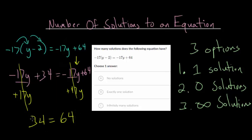Now, obviously, 34 does not equal 64. This is nonsense. And, anytime you get nonsense, you can assume that there just isn't a solution to this. No matter what number I put in for y, this equation will never be equal to itself.